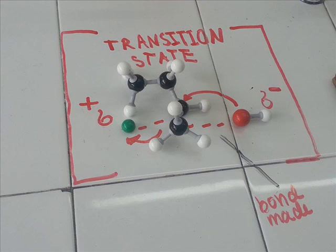Now we notice that a bond is being broken between the bromine and carbon, and a bond is being made between the nucleophile and the carbon atom.